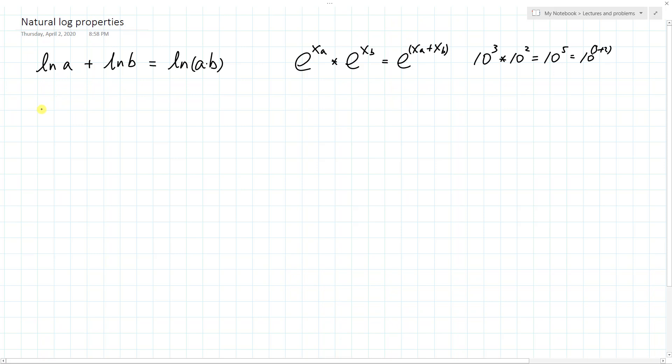So for example, e to the natural log, whatever value, is just equal to a. Because exponential function and natural log function, they are inverse functions of each other.